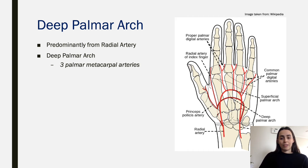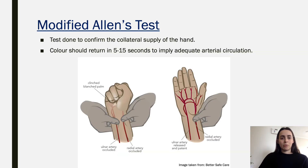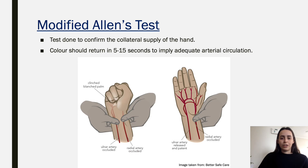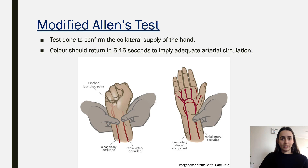That covers the main blood supply of the hand. What's really important clinically is the modified Allen's test. When you're going to use this test in practice, you need to know whether the hand has adequate collateral supply. For example, if you're doing an ABG from the radial artery, you need to make sure that if you thrombose the radial artery, there is enough collateral supply from the ulnar artery so the hand will still have sufficient blood supply. This is assessed using the modified Allen's test.